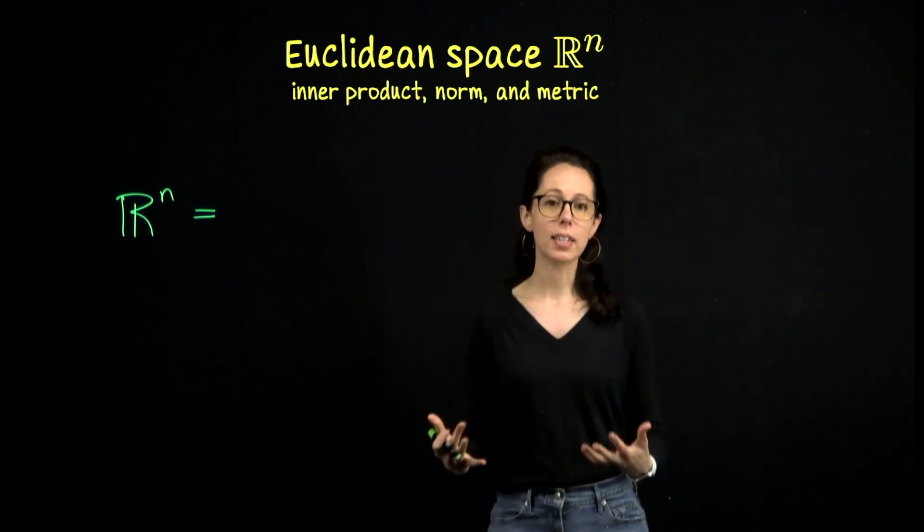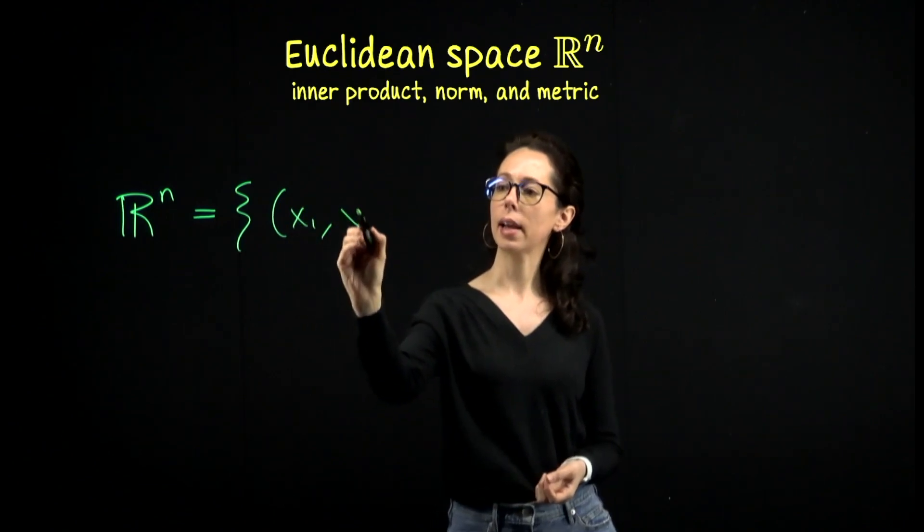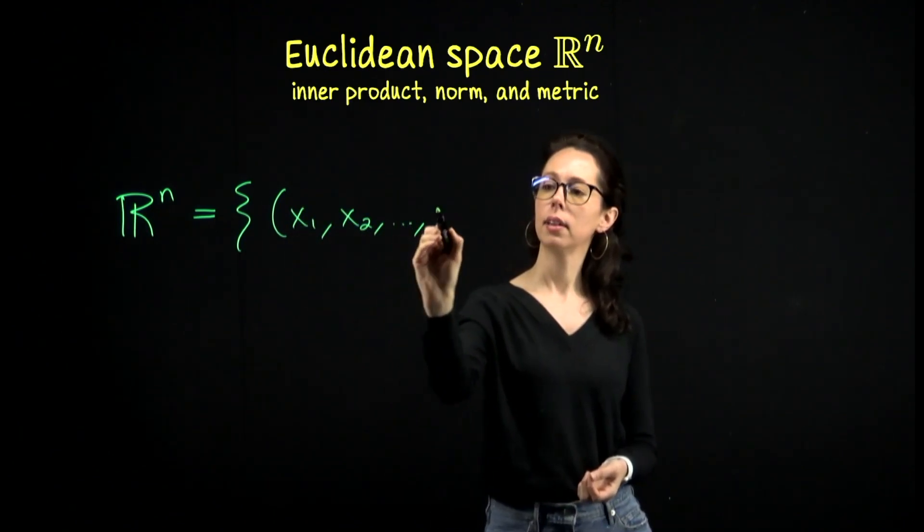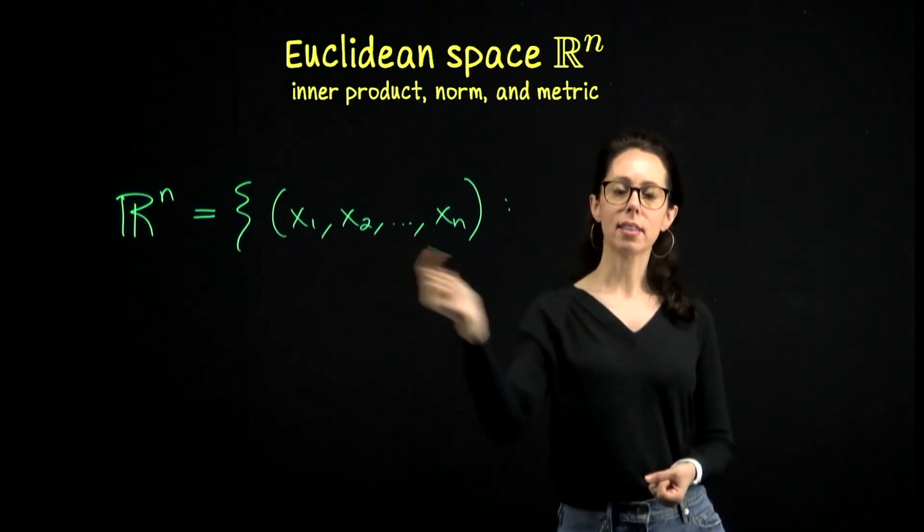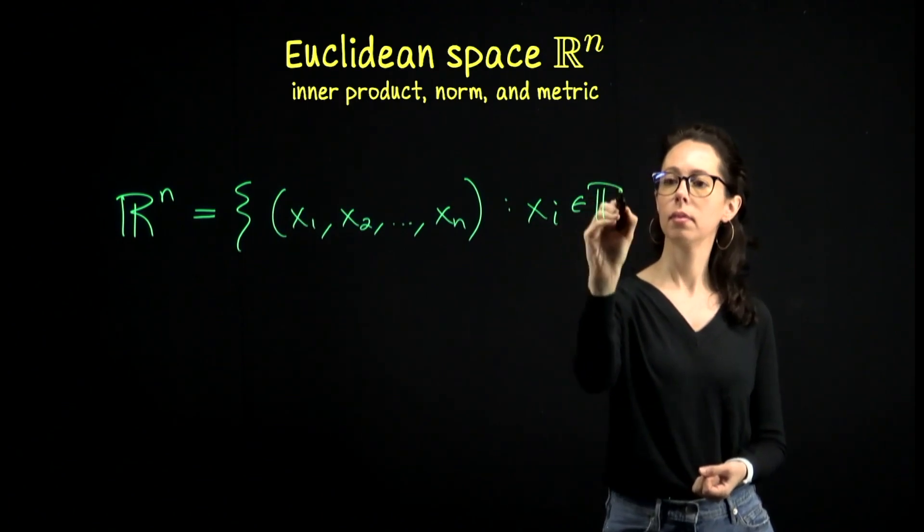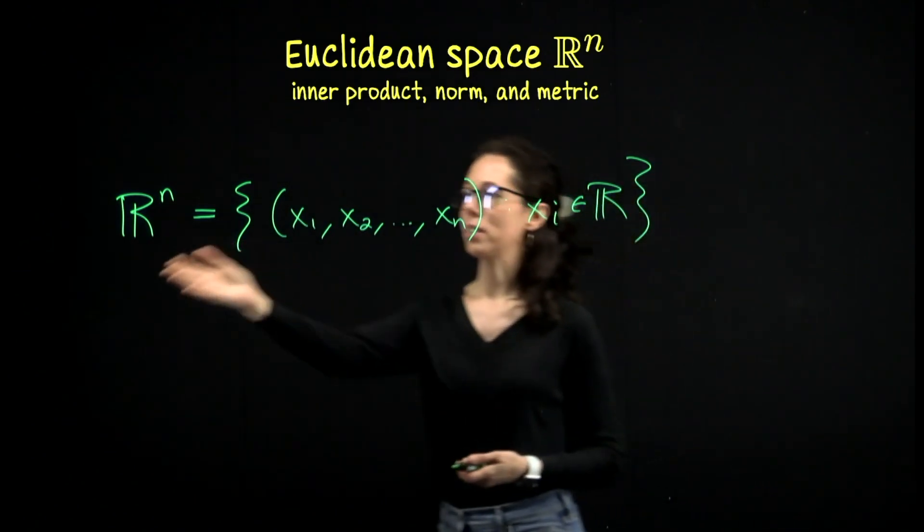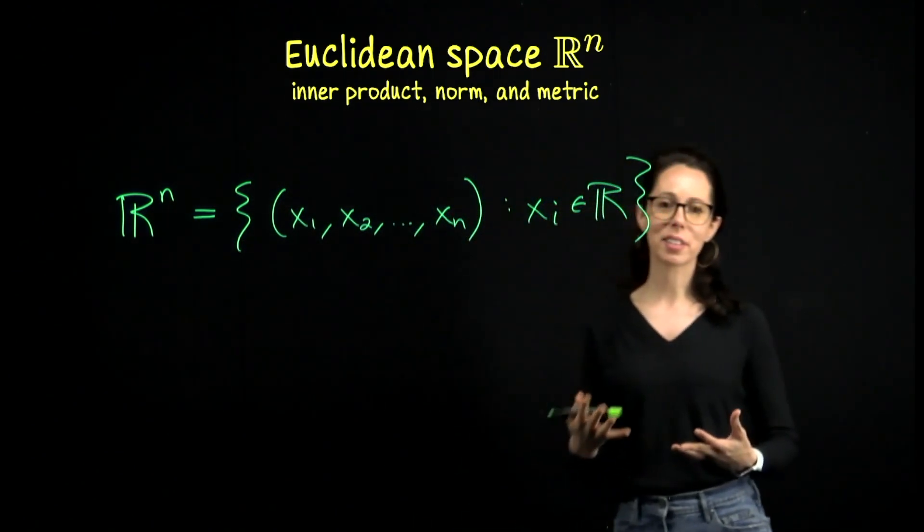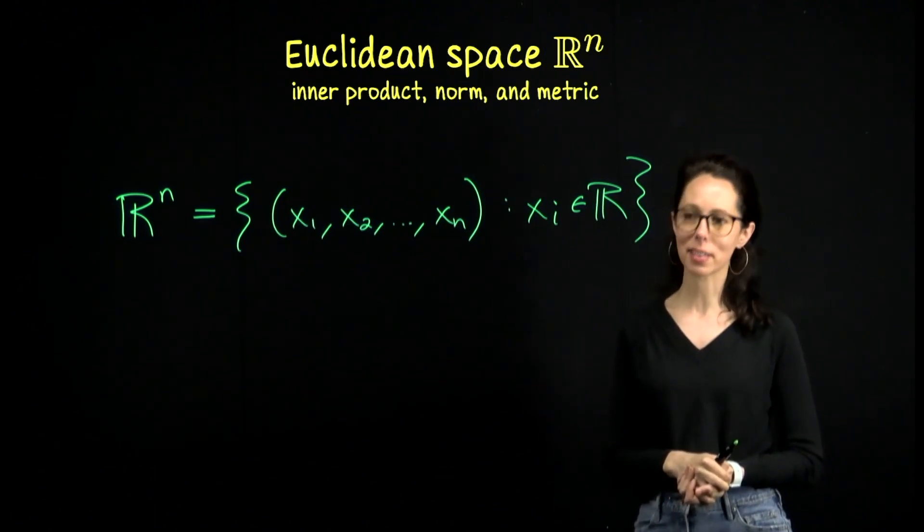Euclidean space R^n. Well, you could say it's the set of n-tuples. So it's the set of n-tuples x_1, x_2, through x_n like this, where each of these coordinates is a real number. And then the real number line, R_1, is just the set of real numbers. R^2 is the xy plane, R^3 is xyz space, et cetera.